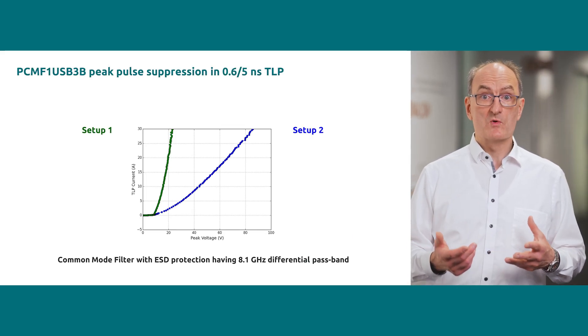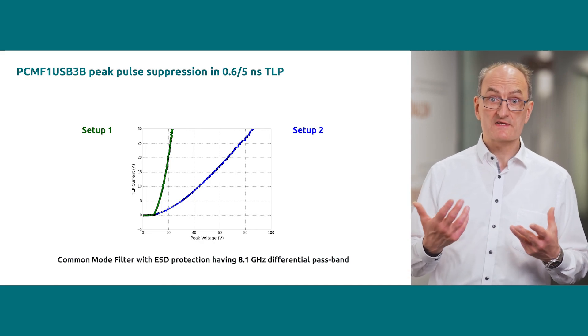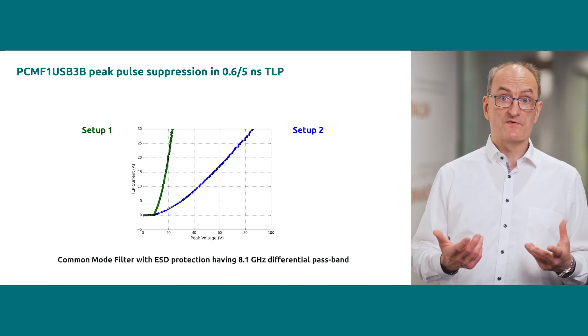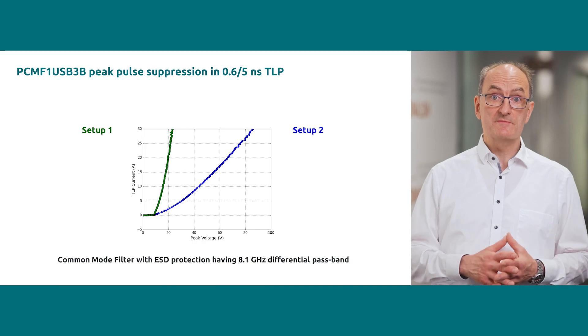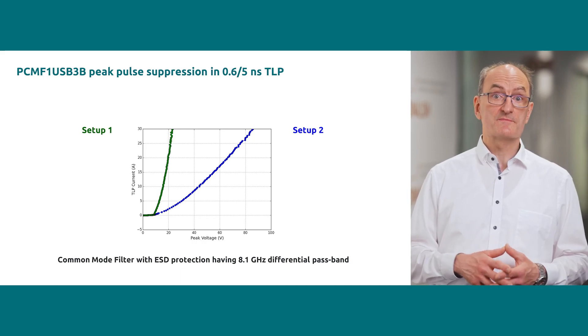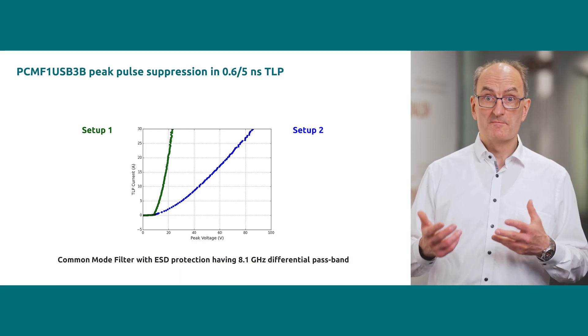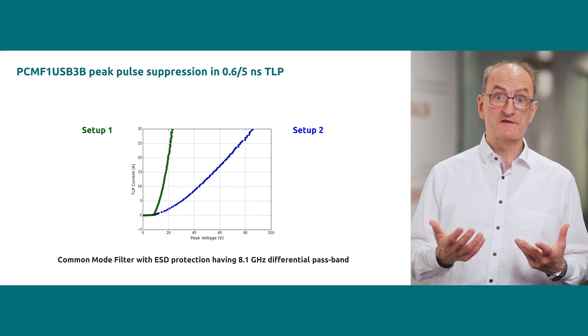Comparing the setup with and without common mode filters in the signal path, the peak voltage for the 30A very fast TLP measurement is reduced almost by a factor of 4 when measuring with the common mode filter in the signal path.